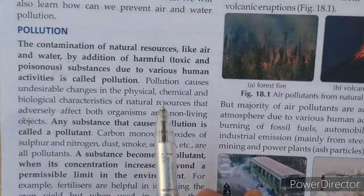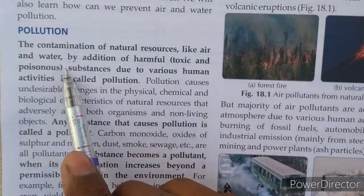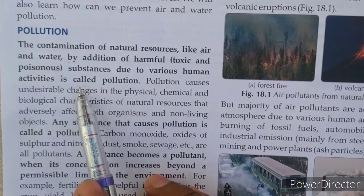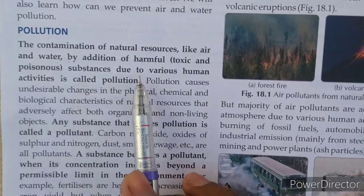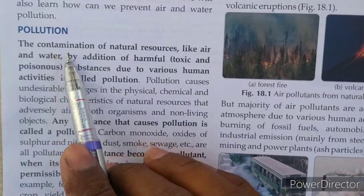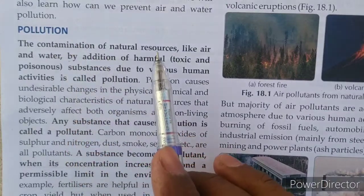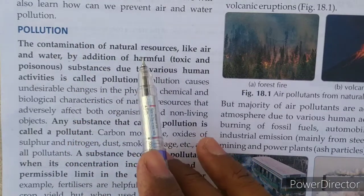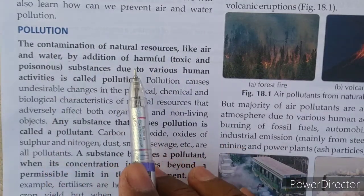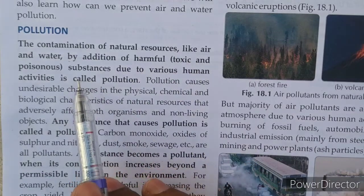The contamination of natural resources like air and water by additional harmful substances due to various human activities is called pollution. Contamination means adding bad or toxic and poisonous things into natural things such as air or water.